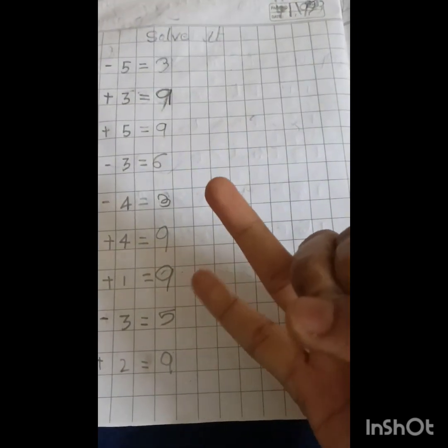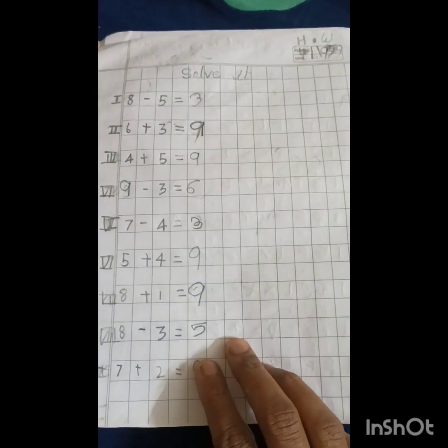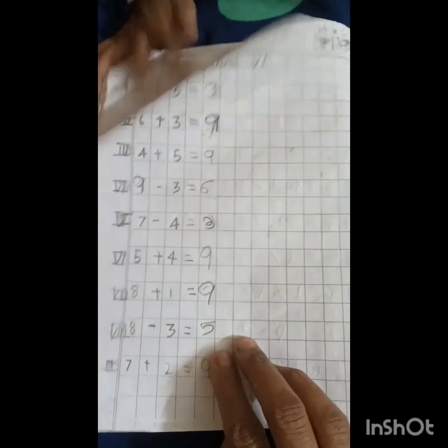7 plus 2 equal to 9. 7 in the mind and 3 in ants. 8, 9. Ok children, if you have any doubt, please tell me in commands. I will repeat. Thank you.